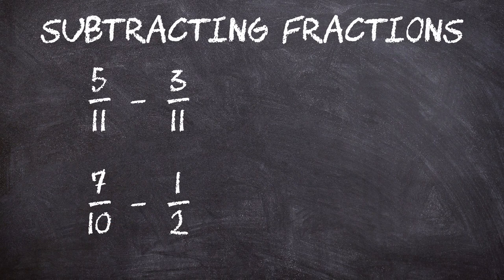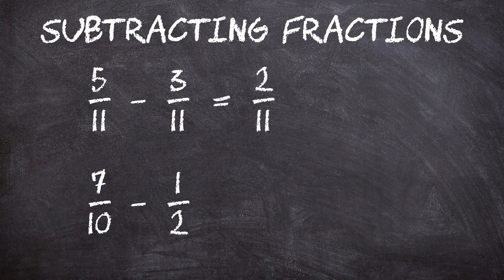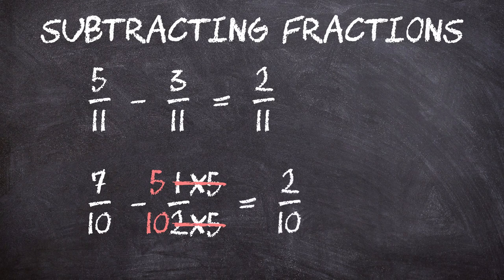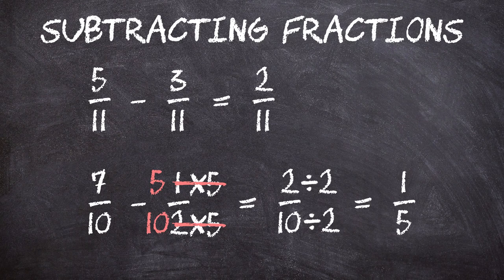Subtracting fractions is very similar to adding them. Again, we need to make sure that we have the same denominators. So for the first one, five-elevenths minus three-elevenths, we can just subtract five minus three to get two. We keep the same denominator, so our final answer is two-elevenths. For the second one, seven-tenths minus one-half, we need to convert the half to have the same denominator as the seven-tenths. We multiply top and bottom by five to get five-tenths. Now we can subtract seven minus five to get two-tenths. We can simplify this by dividing top and bottom by two to get one-fifth. Seven-tenths minus one-half equals one-fifth.